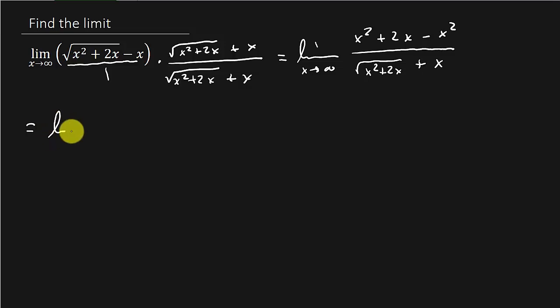So now we've got the limit as x goes to infinity. Well, the x squareds cancel out. We'll get 2x over the square root of x squared plus 2x plus x. So here we have a rational function. We're going to take the limit as x goes to infinity.